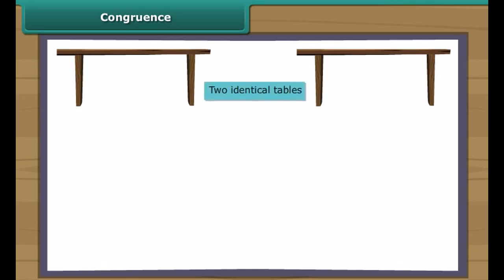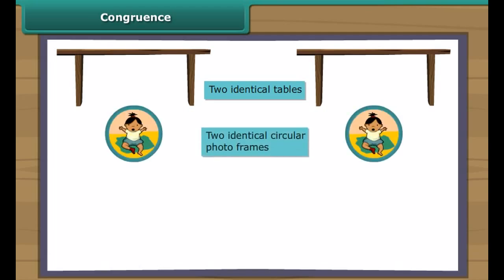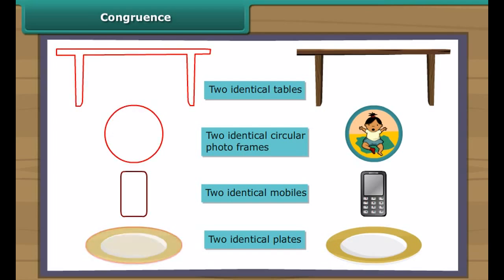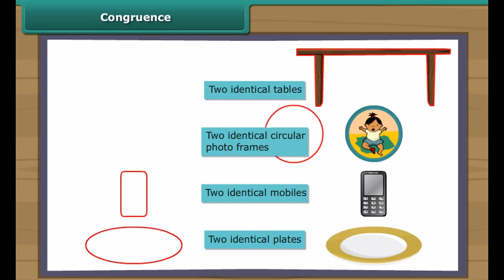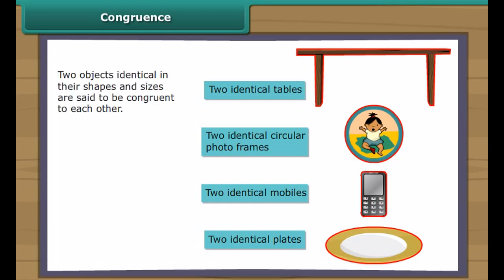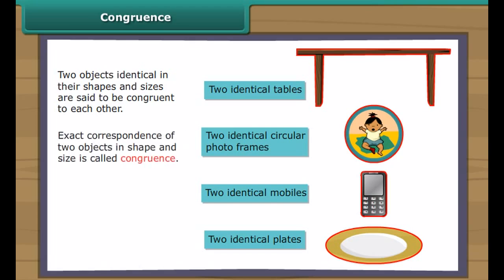Congruence. Look at these objects. What strikes you about them? Yes, you are right — they are identical. Let us look at some more identical objects. We will now perform an activity: we draw their outlines and then remove the objects. Next, we slide the outlines of each pair of identical objects one over the other. What do we observe? The outline at the bottom is invisible — it merges with the outline on the top exactly. Two objects identical in their shapes and sizes are said to be congruent to each other. Exact correspondence of two objects in shape and size is called congruence.